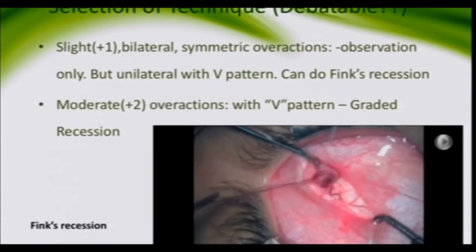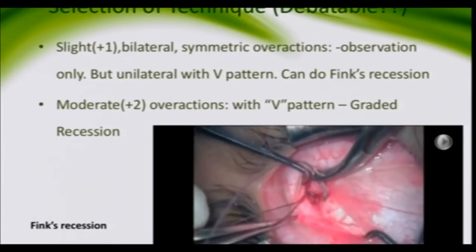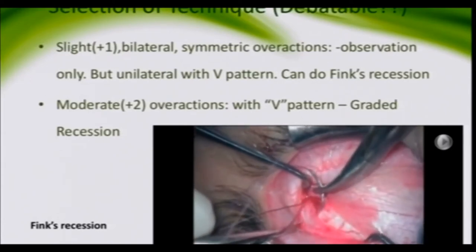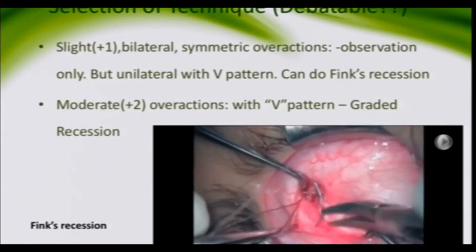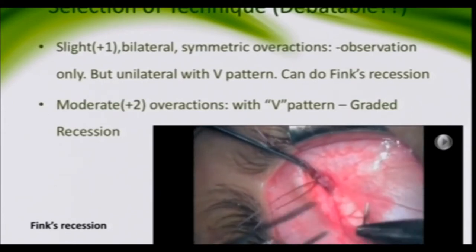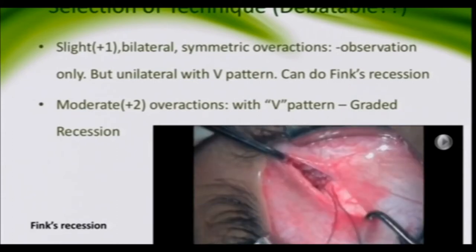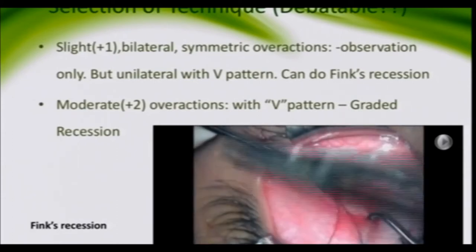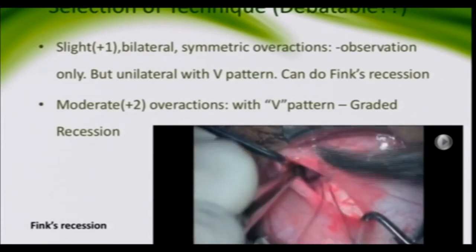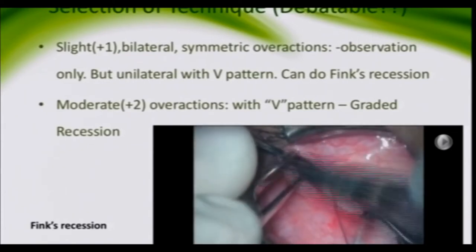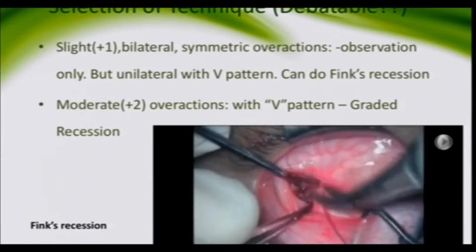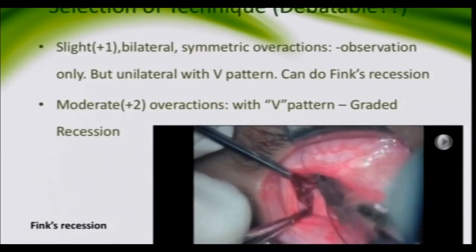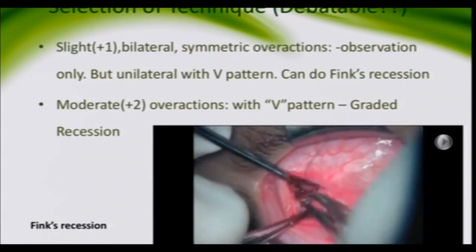For the inferior oblique Fink's recession, you go 6 millimeters posterior and 6 millimeters inferior to the lateral rectus — that is classic Fink. You can augment it by going 8 millimeters posterior and 6 millimeters inferior, giving a further recession of about 10 millimeters. In a Fink's recession, there is a bunching of the muscle, with the posterior end tied only 3 millimeters posterior to the anterior end.